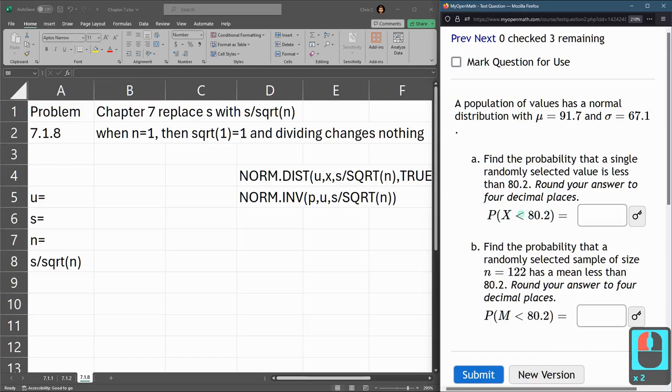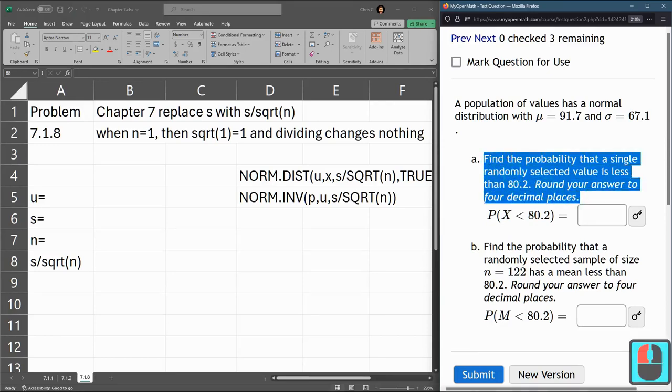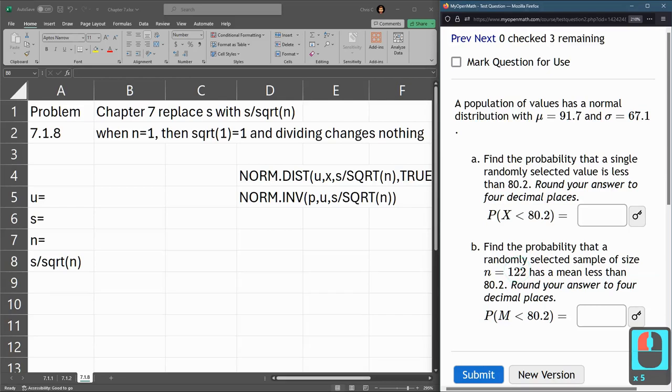They didn't explicitly give us an n for part a. In part b, the n is 122, so that'll be just like the problem we did before. But part a, there's no n.